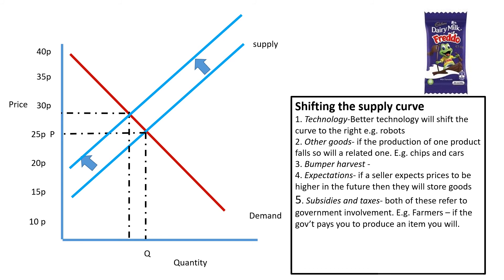Another factor: if the production of one product falls — a component or related product — then the supply of another will fall too. At the moment, there is a world shortage of the computer chips that go into cars, so they cannot produce the cars because the cars require the chips. A fall in supply of one good knocks onto a fall in supply of another. If we were looking at Starbucks, a fall in the supply of coffee might result in a reduction in Starbucks output.